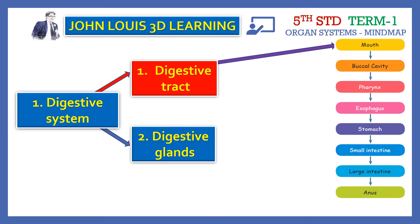The digestive tract includes the pharynx, esophagus, stomach, small intestine, large intestine, and anus. So this is the digestive tract — the path that food travels through our body.